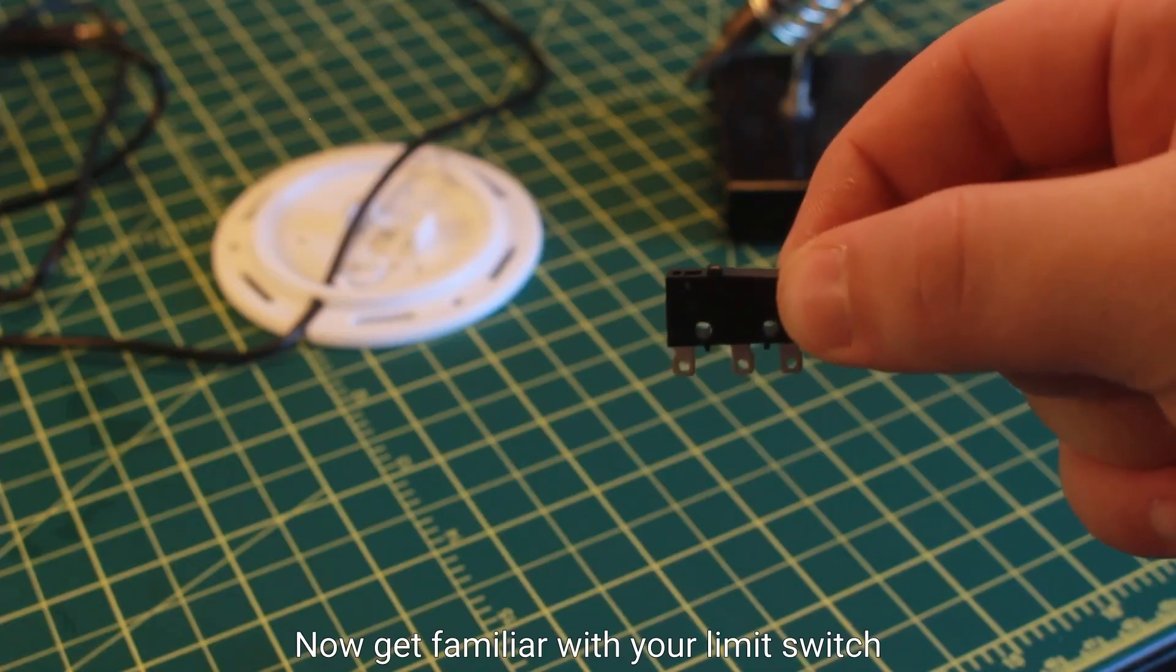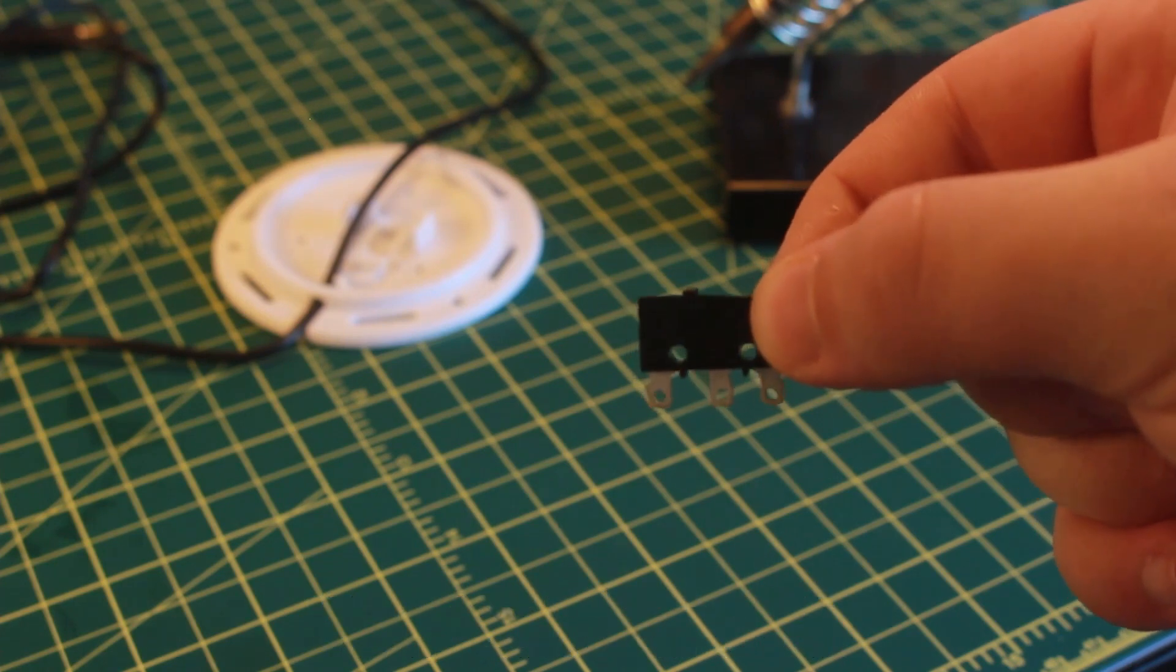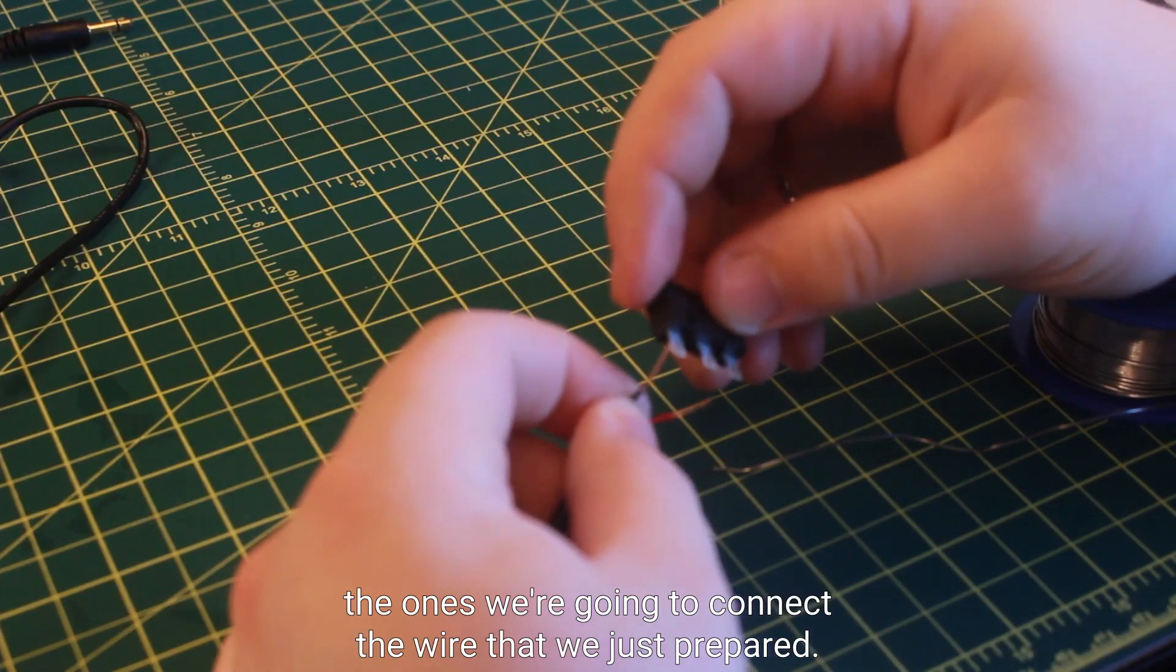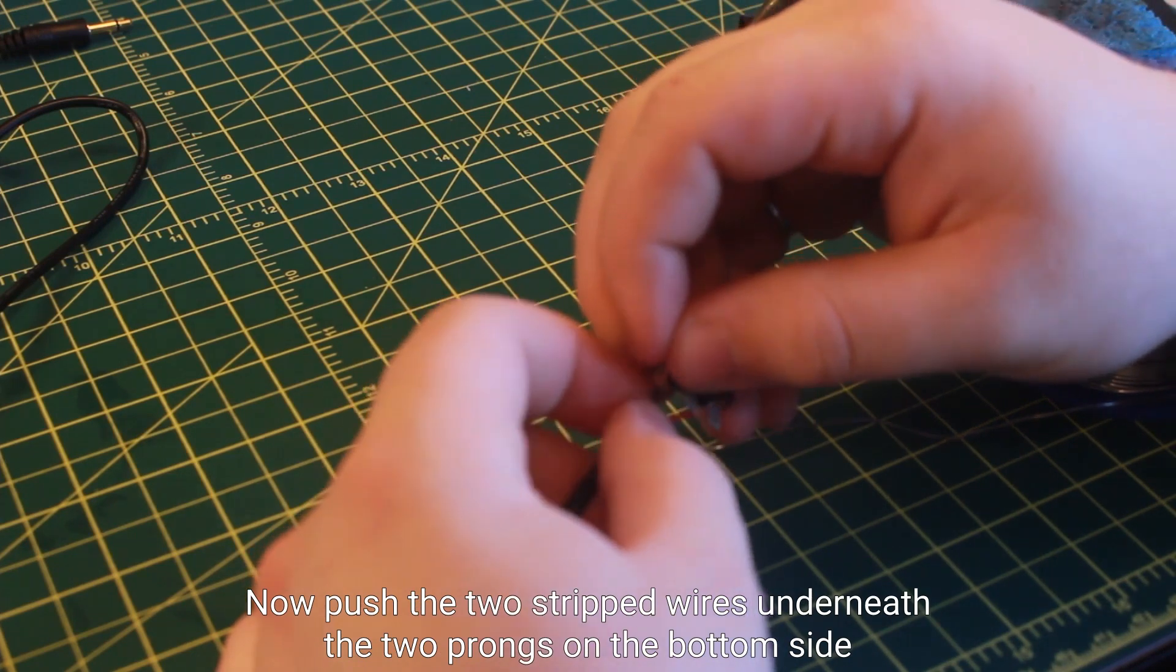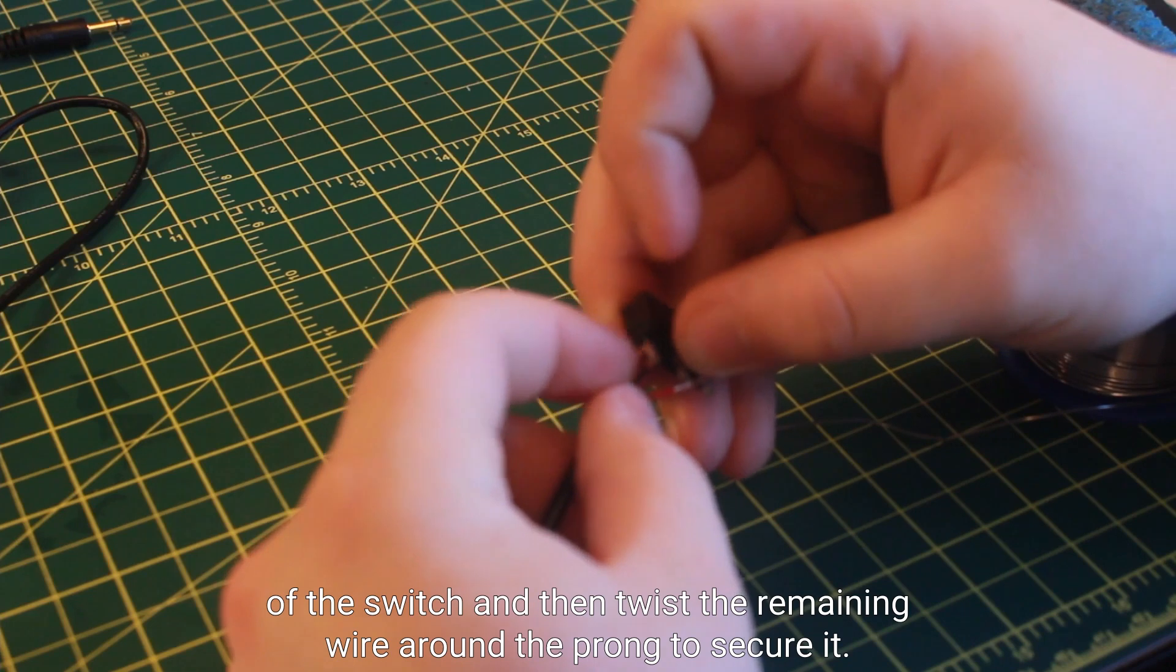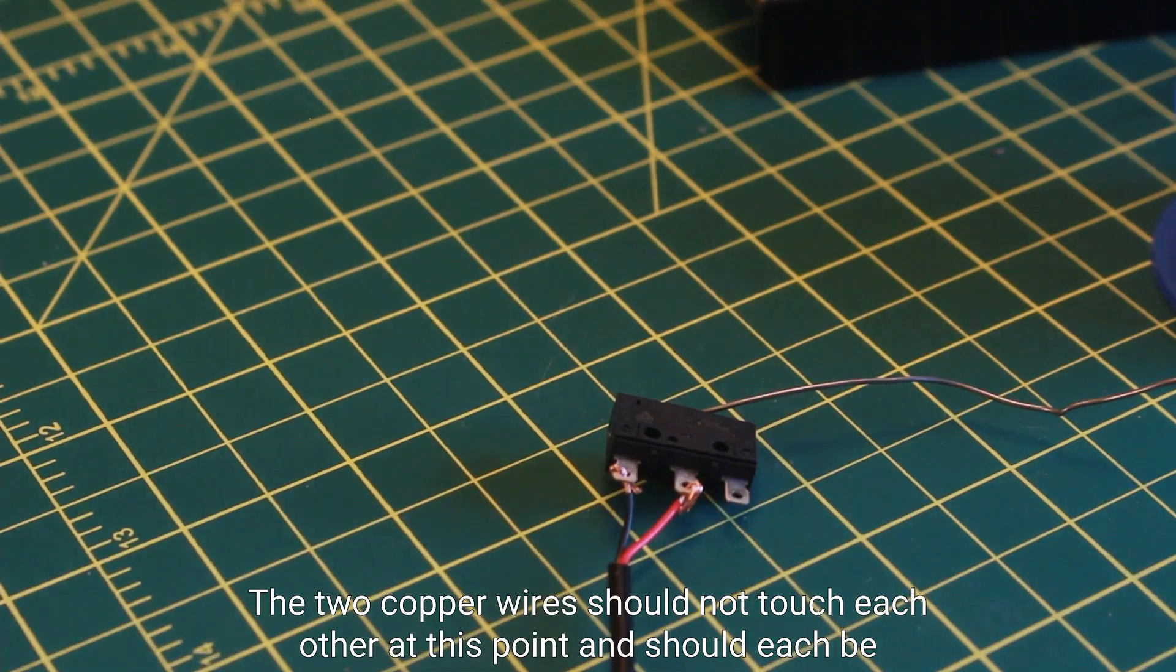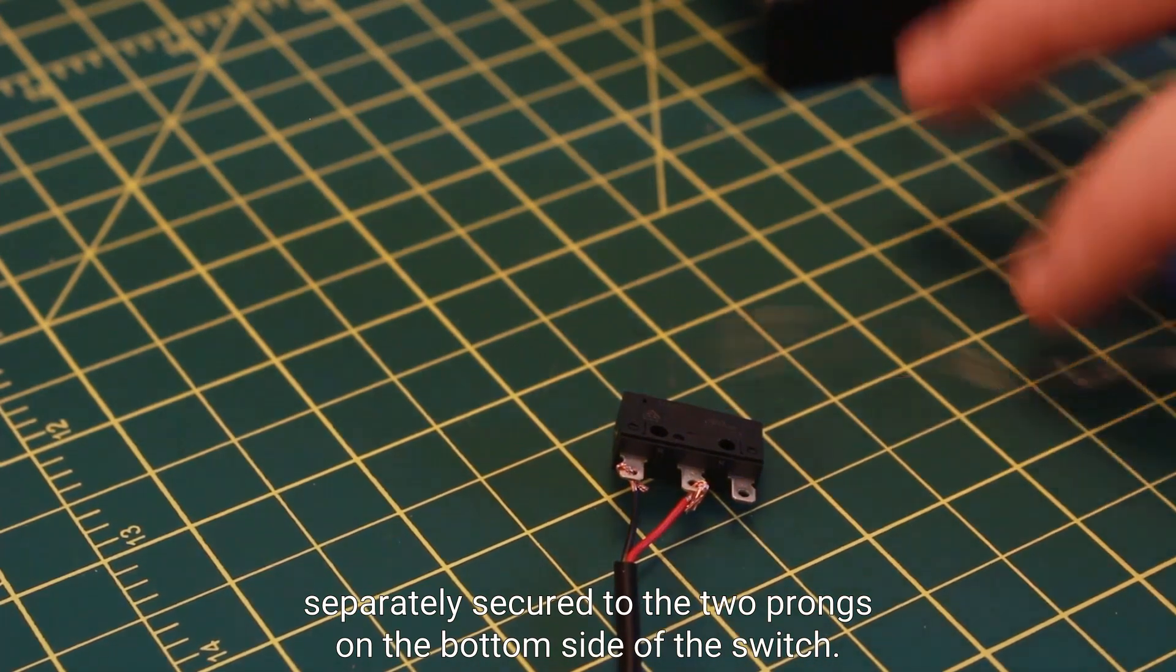Now get familiar with your limit switch and notice that the button on the top is closer to one side than the other. That's the side that we want to work on. The two prongs underneath that button are the ones we're going to connect the wire that we just prepared. Now push the two stripped wires underneath the two prongs on the button side of the switch and then twist the remaining wire around the prong to secure it. The two copper wires should not touch each other at this point and should each be separately secured to the two prongs on the button side of the switch.